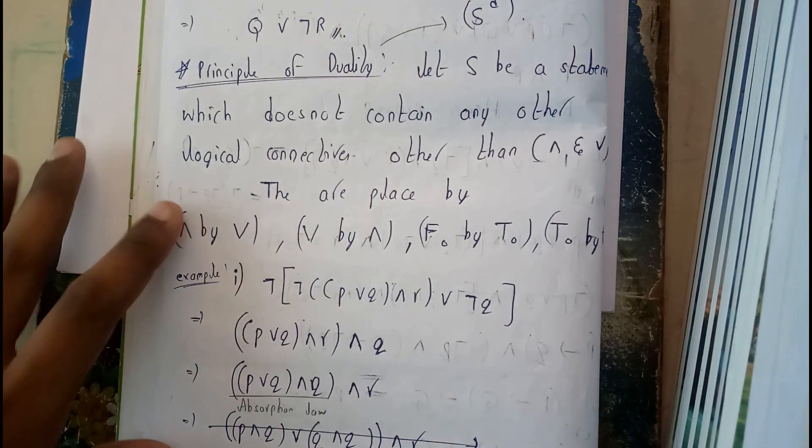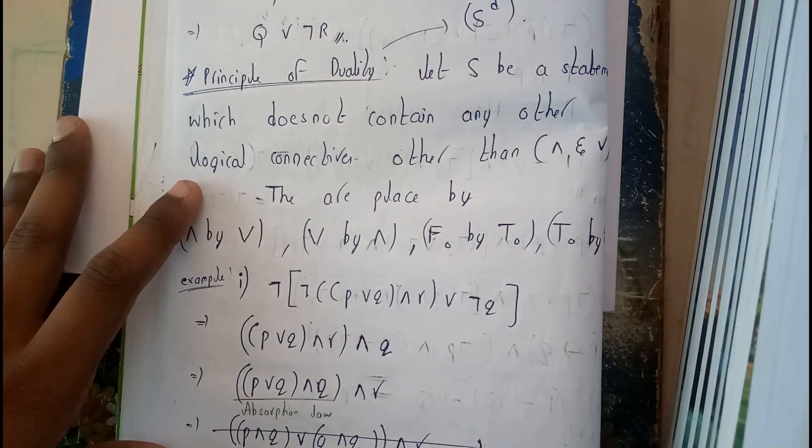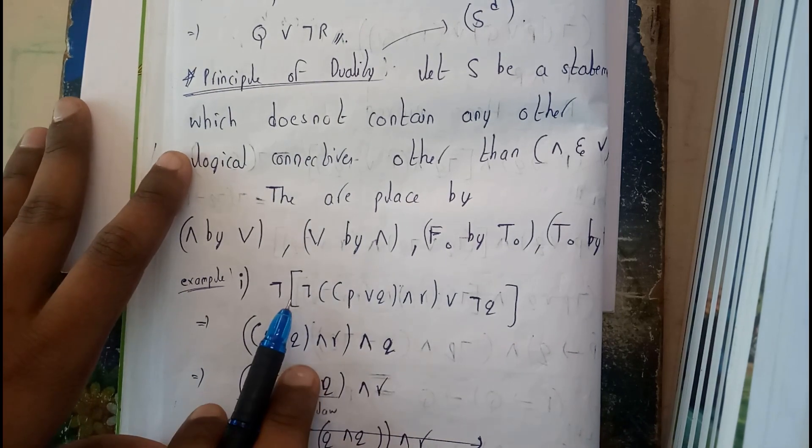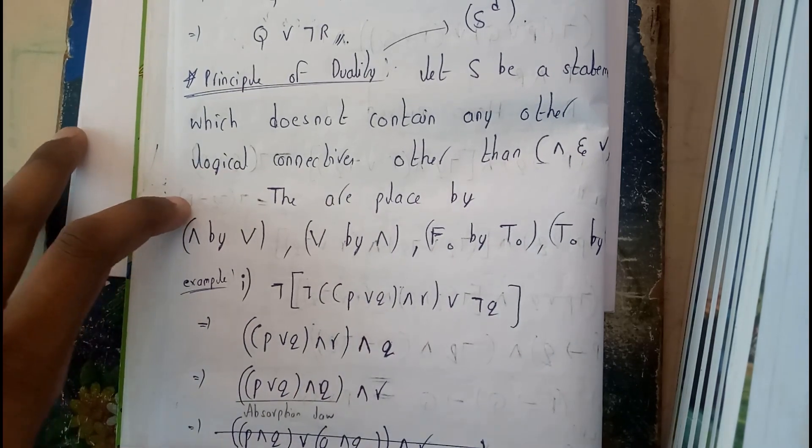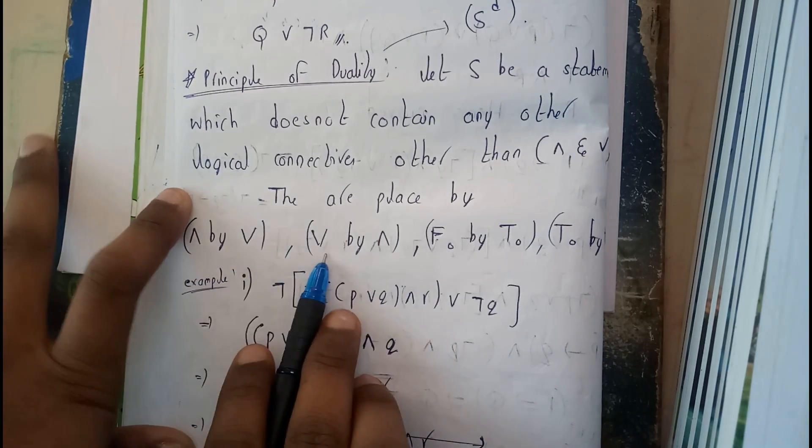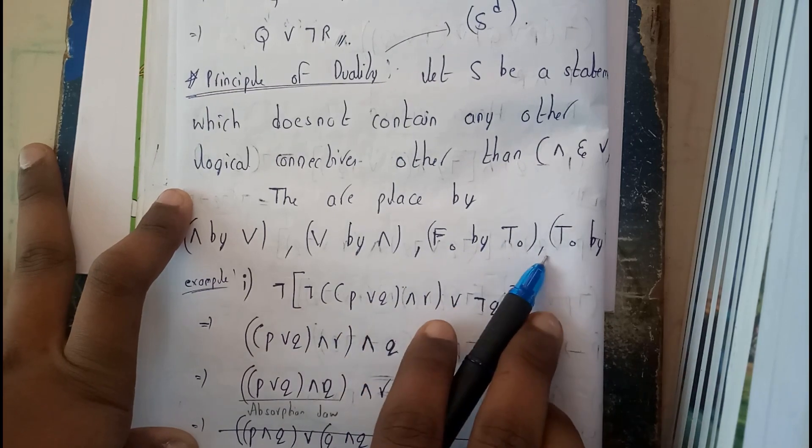In this tutorial, let's see what is the principle of duality. Duality is nothing but applying negation. The question is given like negation of negation of something. In negation, if we have AND it will be replaced by OR. If it is OR, then replaced by AND. If it is FALSE, replaced by TRUE. If it is TRUE, replaced by FALSE. Let's take an example: negation of this whole part.